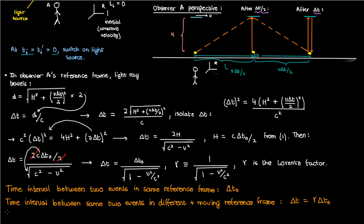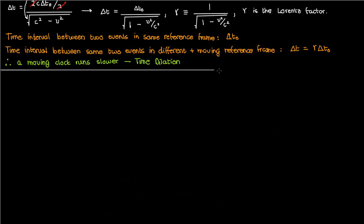This phenomenon — that a moving clock, one moving with respect to two temporally separated events, runs slower — is called time dilation. It tells us that time is relative, just as motion is relative according to the first postulate of special relativity.